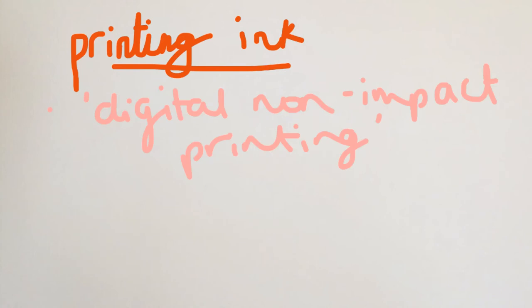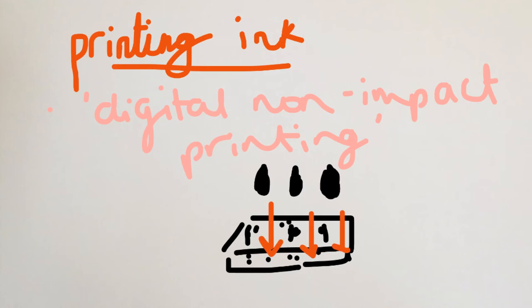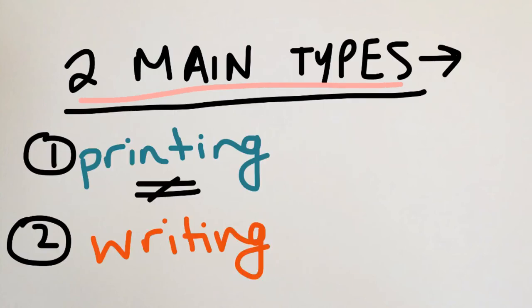And the latter having to do with digital images, obviously, being printed by embedding drops of ink onto the surface. So think of inkjet printing and the likes. But the main two types of ink, printing and writing, largely differ due to chemical composition.